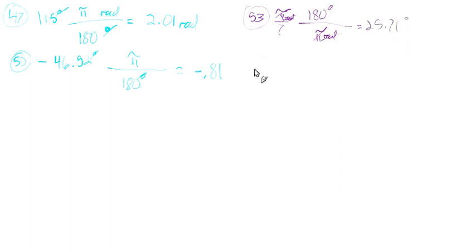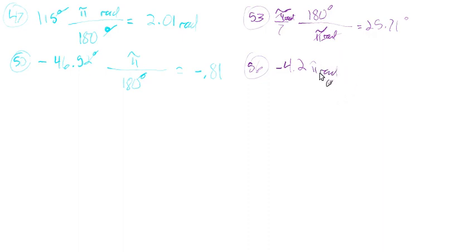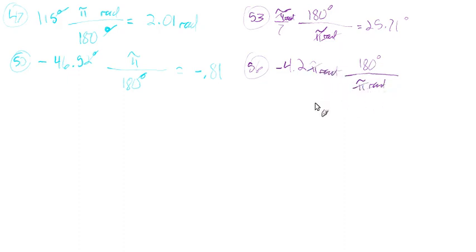Number 56: negative 4.2π radians, converted to degrees. Multiply by 180 over π — the radian unit and the number π both cancel. We're left with 180 times negative 4.2, which equals negative 756 degrees.